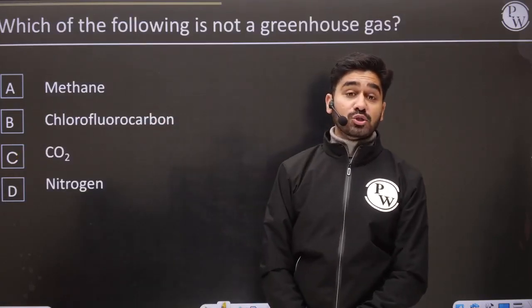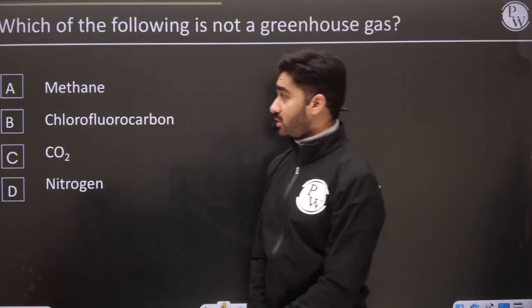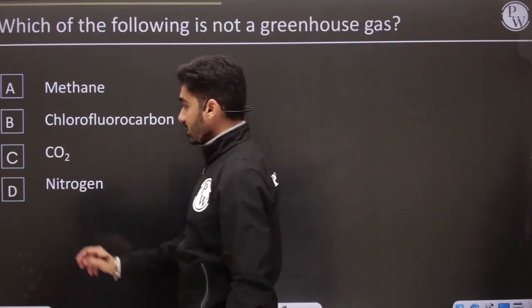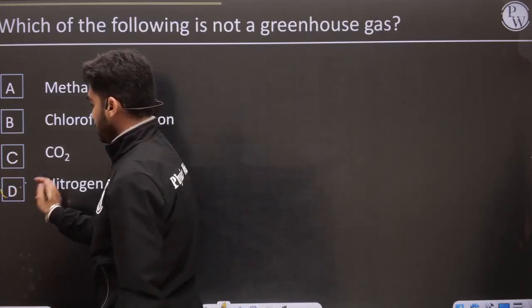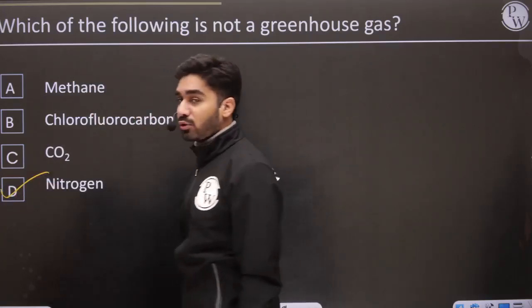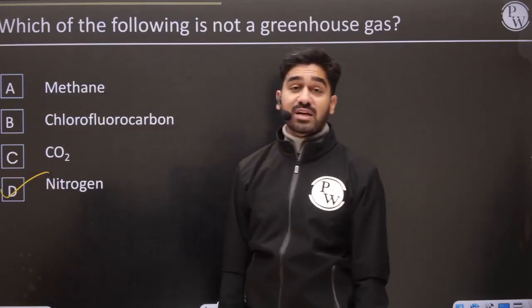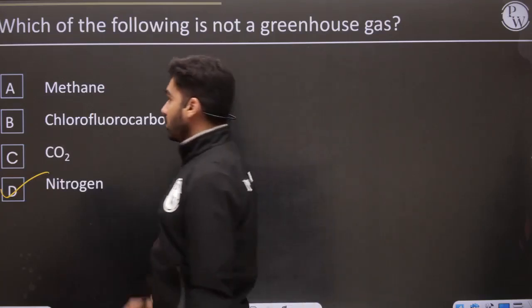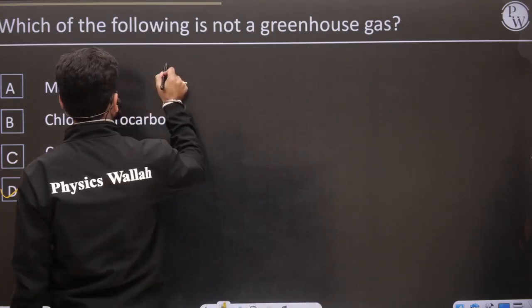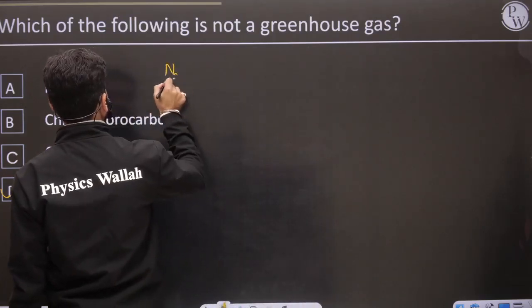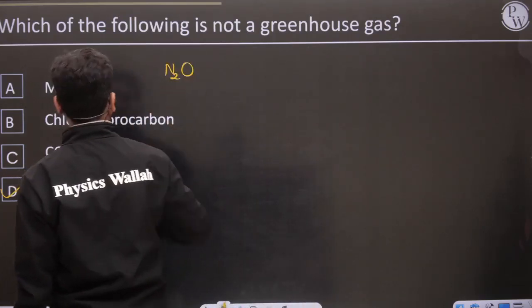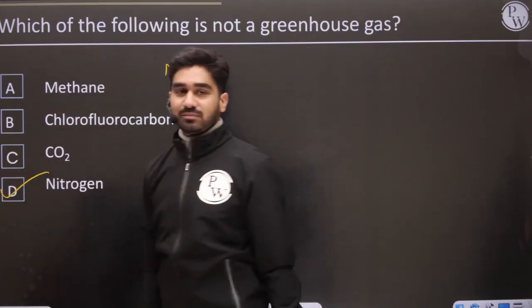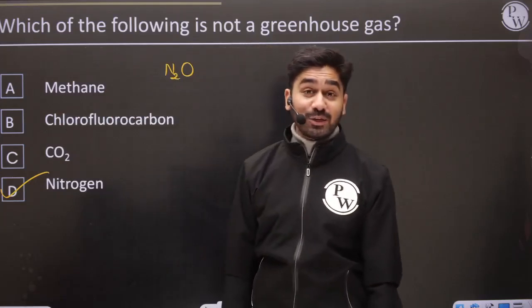Which of the following is not a greenhouse gas? Nitrogen (N2) is not a greenhouse gas. In the greenhouse gas list, we had N2O — not N2.